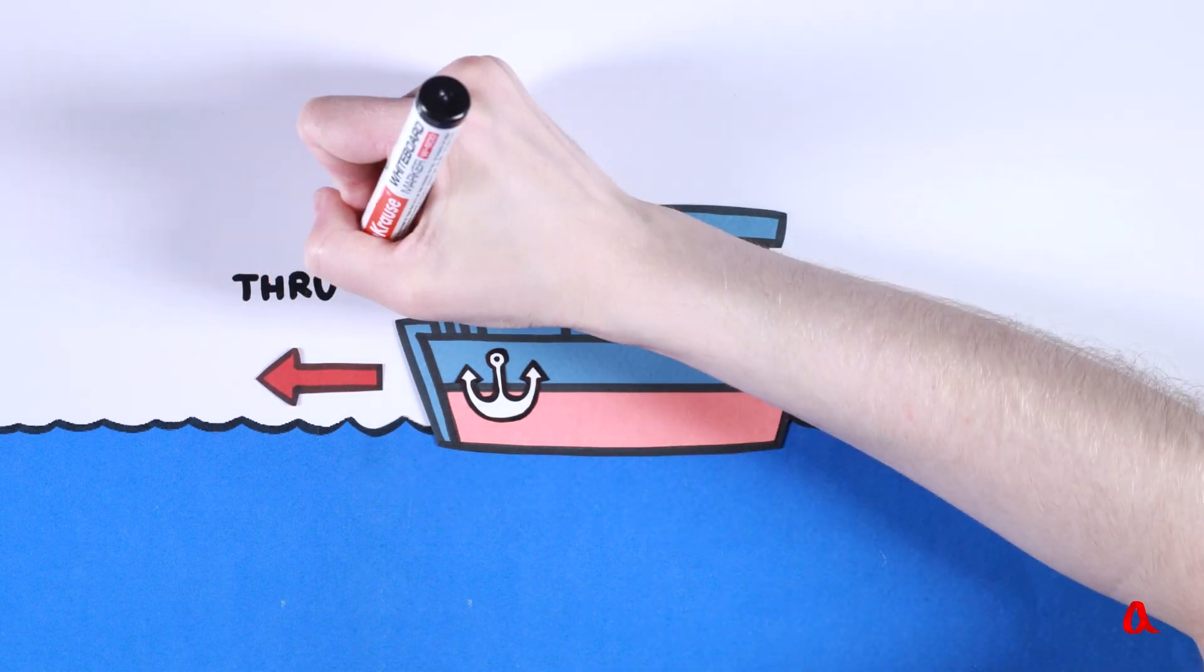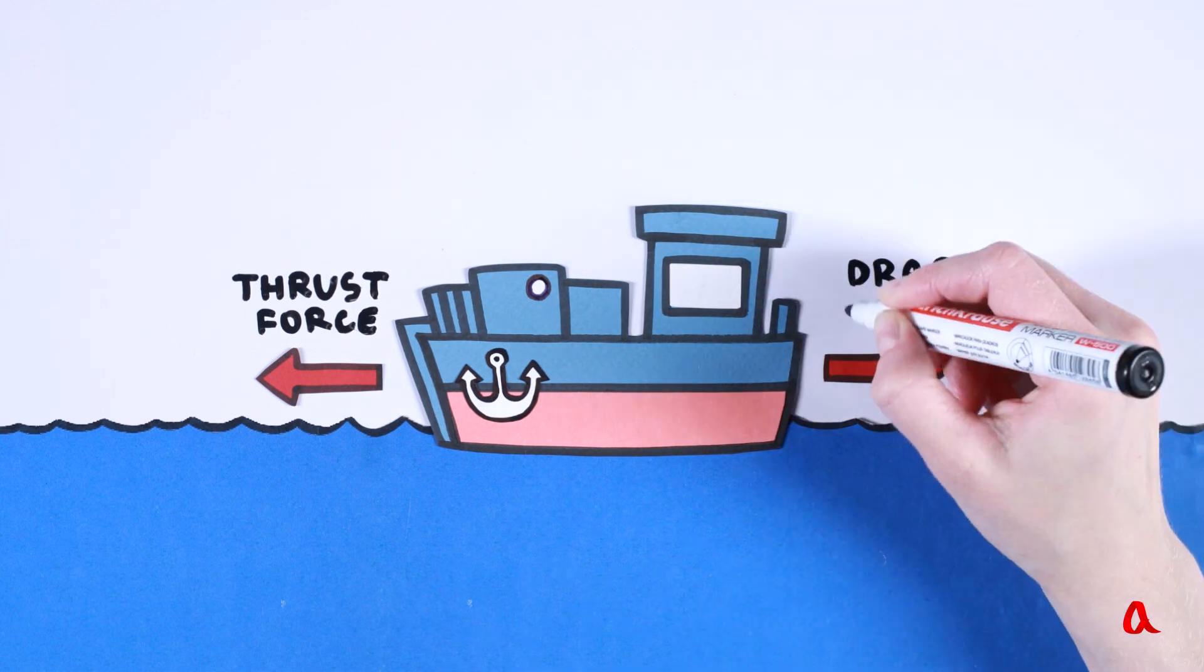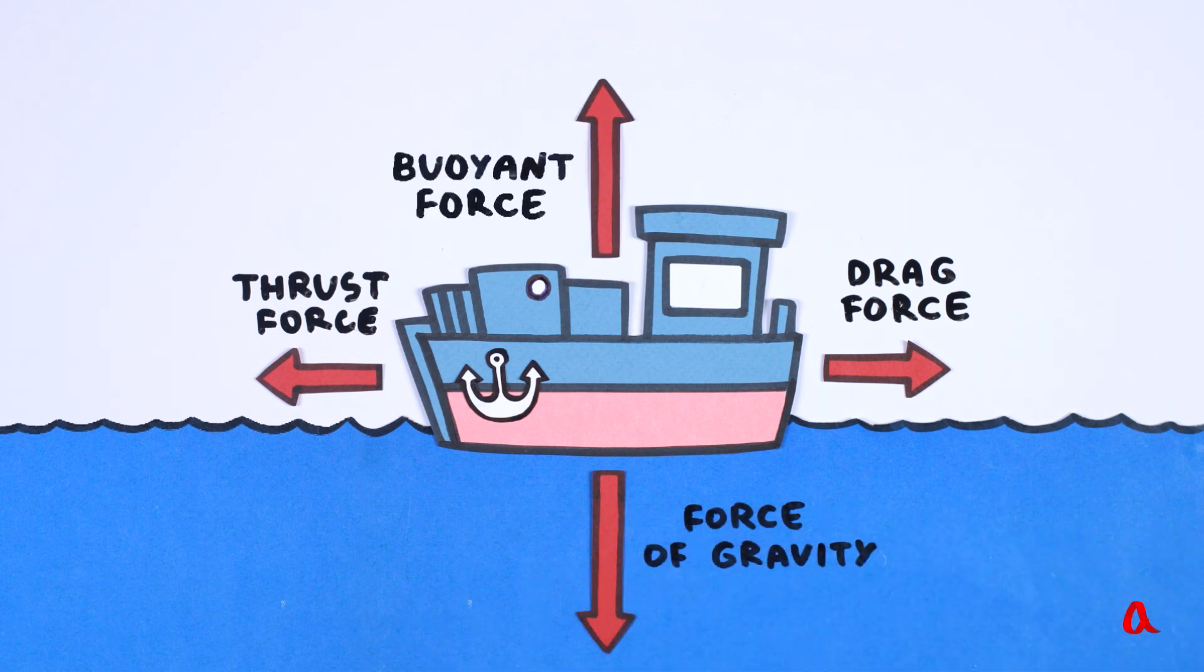The forward thrust force generated by the propellers is balanced by the backward drag force of the water, while the downward force of gravity is balanced by the upward buoyant force.